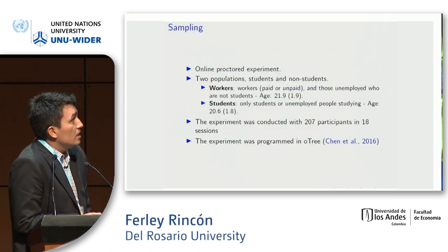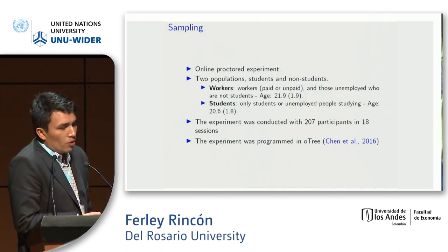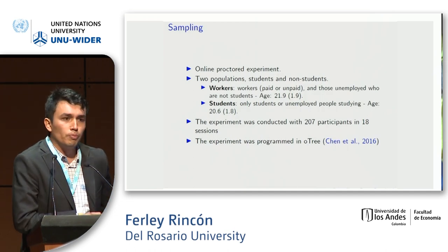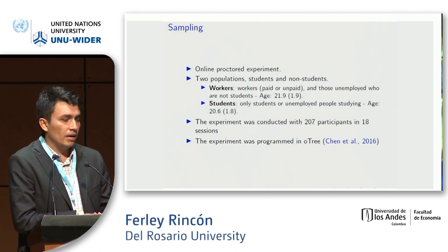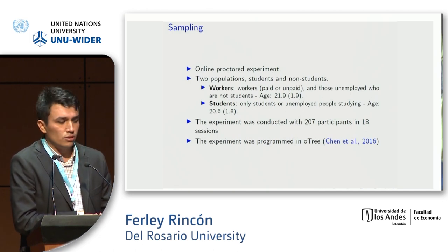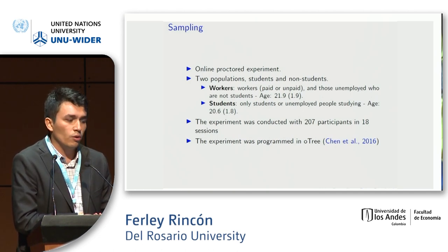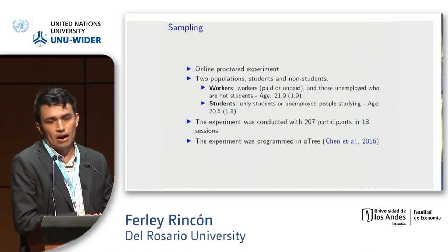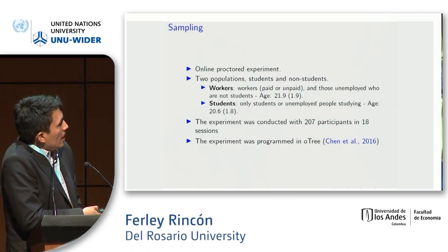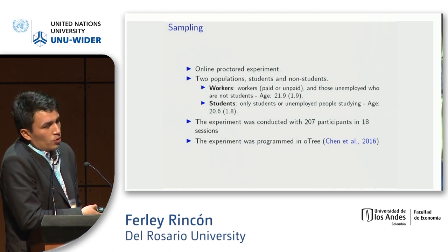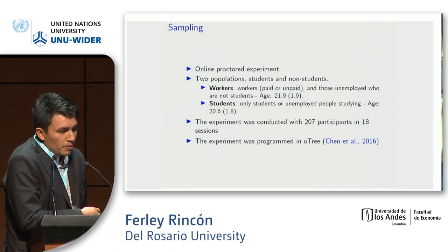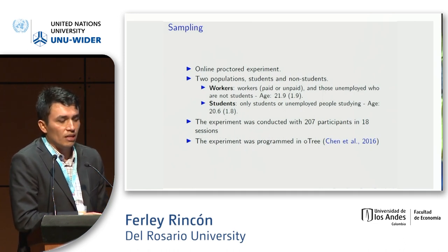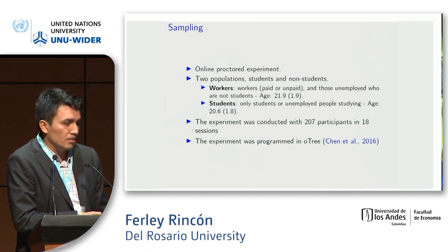This slide presents some details of the experiment. We use an online productive experiment with two populations: students and non-students. We separate these into workers — paid and unpaid — and students who only study or unemployed people who are studying. The age between the groups is similar, and this experiment was conducted with 207 participants in 18 sessions.